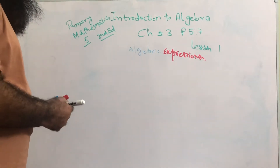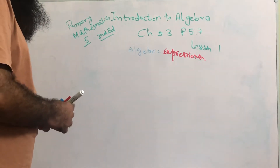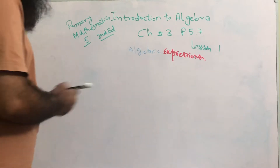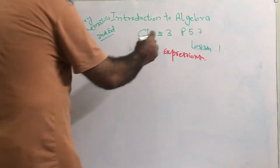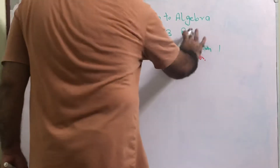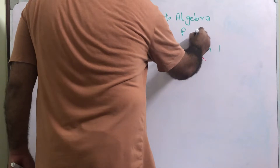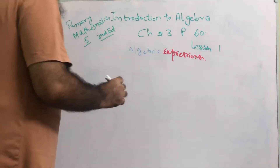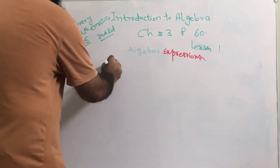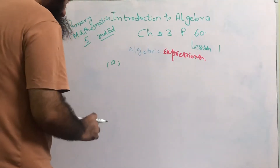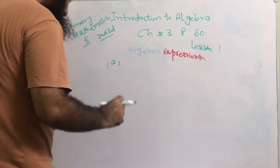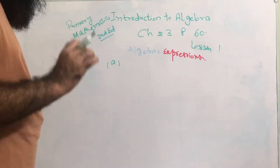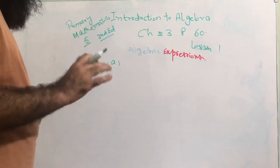Bismillahirrahmanirrahim. Now we will be doing question number 2, page number 60. Part a is: write an algebraic expression for each of the following. So we need to write algebraic expressions for all the parts.